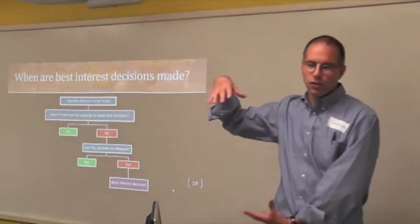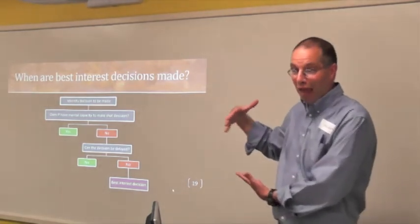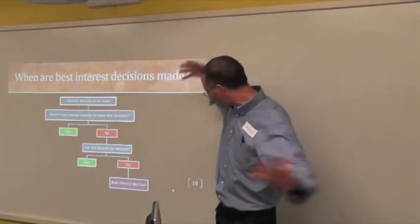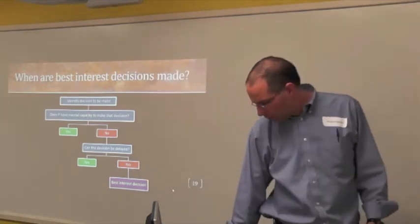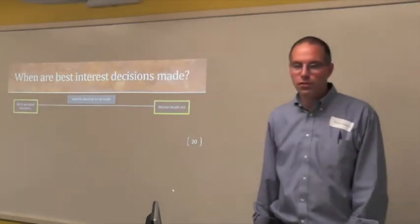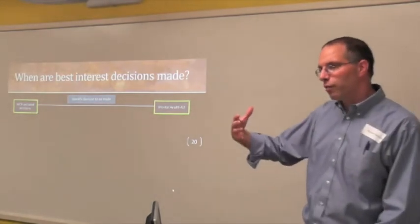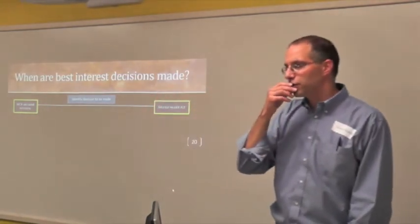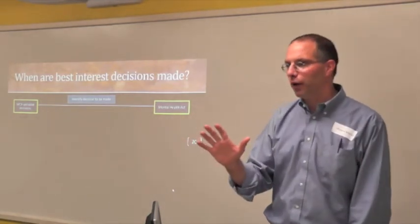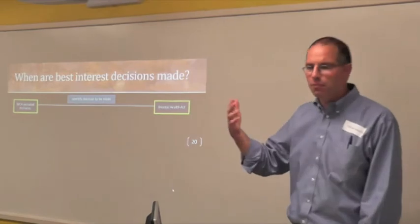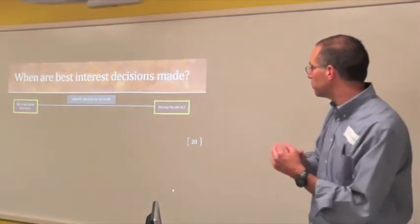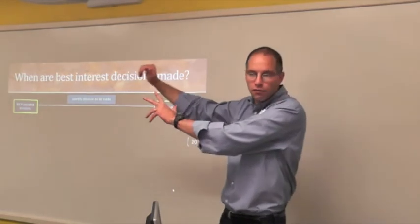If the answer is no, you're not even there yet, because it's possible we could delay the decision. Maybe they're incapacitous because they're unconscious, but we're expecting them to come out of their anesthetic in a few hours, and we can delay the decision until that point. Maybe this decision about whether to submit to surgery is one that we can let it run for a few days. If we can delay the decision, then we're still not acting in his best interest. It's only now when we get to no on both of these questions that we find ourselves in the best interest decision-making framework. There are off-ramps from this decision tree. The act has certain decisions that you never can make in somebody's best interest. Voting, adoption, marriage—there's a list of exemptions. These decisions never come into the best interest decision-making context.